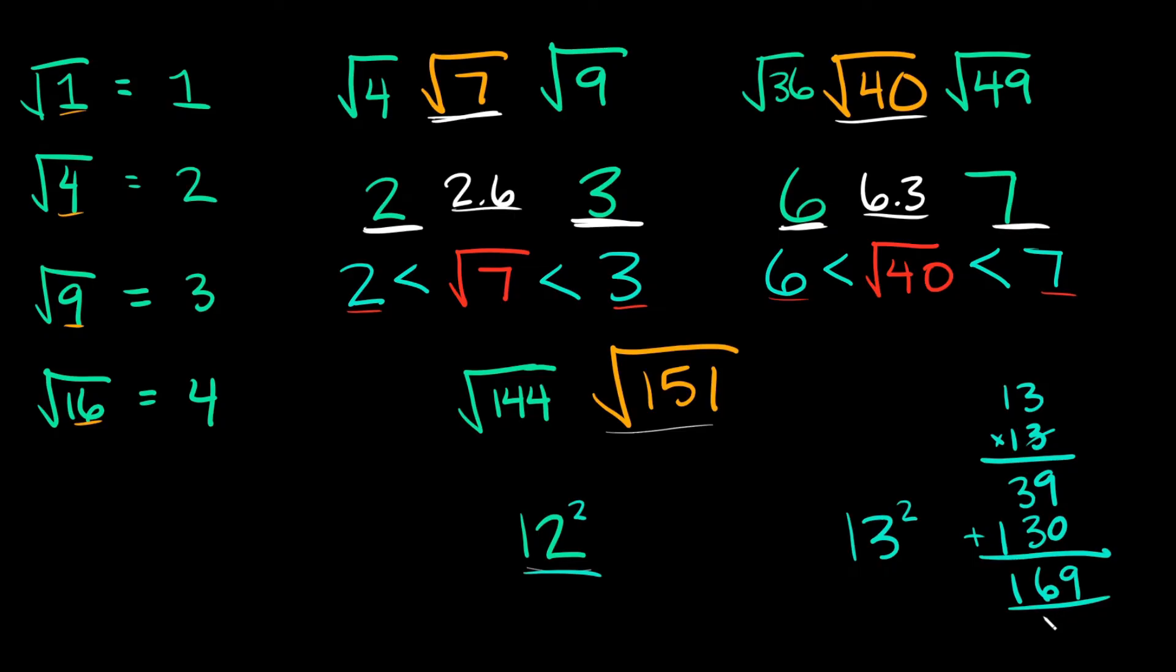In other words, we could say the square root of 169 is equal to 13. Since 151 is between 144 and 169, that means the square root of 151 must be somewhere between 12 and 13.